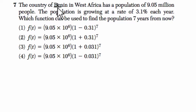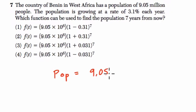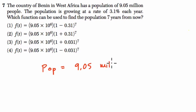The country of Benin in West Africa, sorry for mispronouncing that, has a population of 9.05 million. So I like to write that down. The pop is 9.05 million. And if you remember, million, that's 10 to the 6th, right? So it's 9.05 times 10 to the 6th.